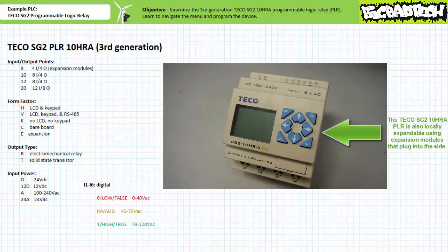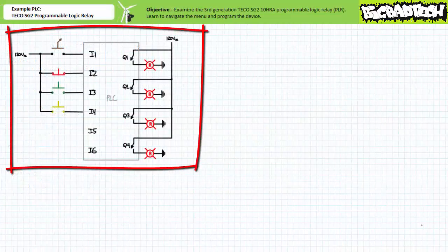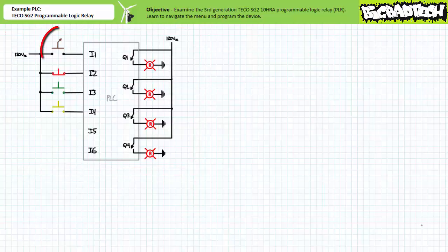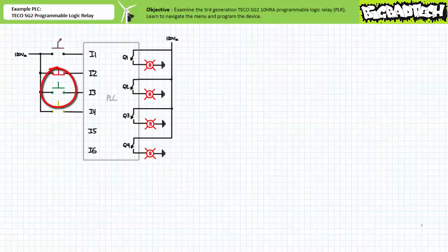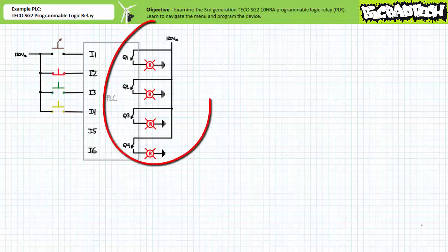Note: if the device is set to start in run mode and contains a valid program, upon power up it will immediately execute that program. This could be hazardous in an industrial environment, so familiarize yourself with proper shutdown and startup procedures. For our sample system, the schematic indicates a normally open maintained contact selector switch on input one, a normally closed momentary red push button on input two, a normally open momentary green push button on input three, a normally open momentary yellow push button on input four. Inputs five and six have no field devices attached. Relay outputs Q1 through Q4 selectively energize or de-energize pilot lamps with 120 volt AC.